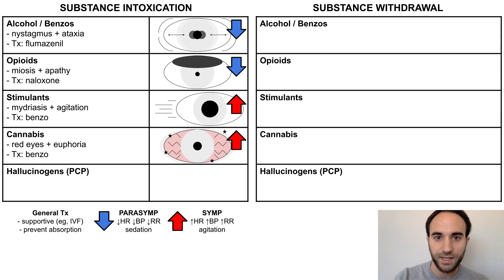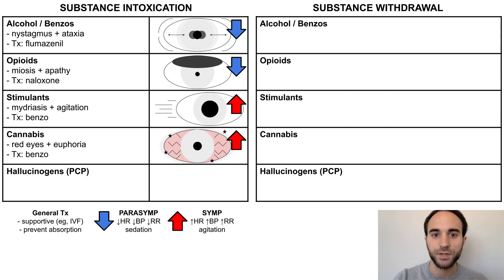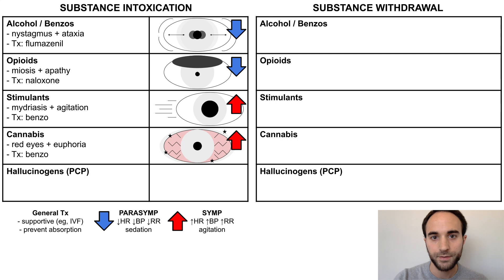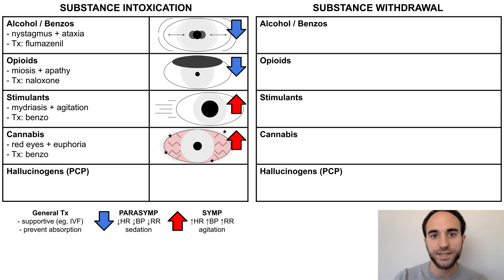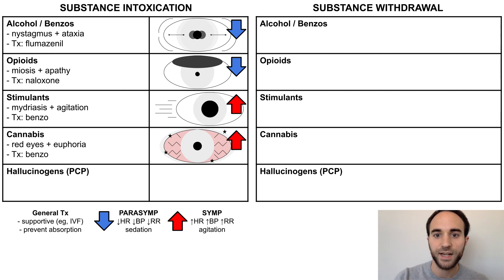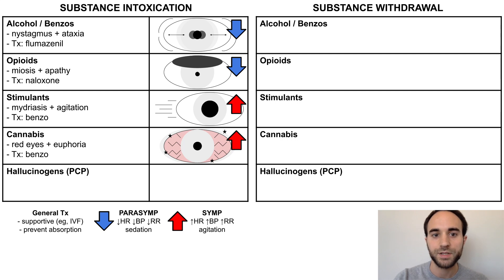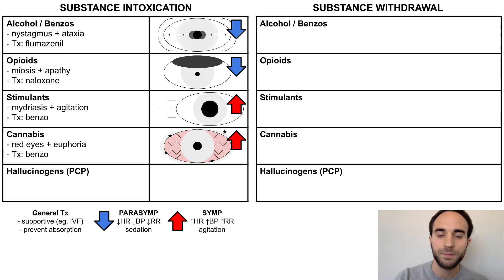Cannabis intoxication involves red eyes, also known as conjunctival injection, and euphoria. Although cannabis has both depressant and stimulant properties, in intoxication it usually causes sympathetic activation. There is no specific antidote, but again, benzos can help symptomatically.